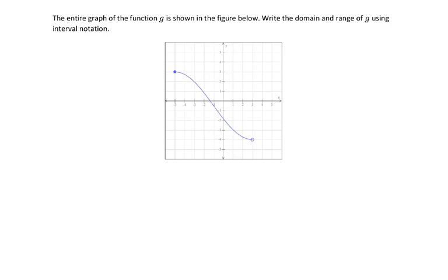So remember, when you're using interval notation, you're using brackets when things are included or they have filled in circles, and parentheses when they're excluded or open circles.